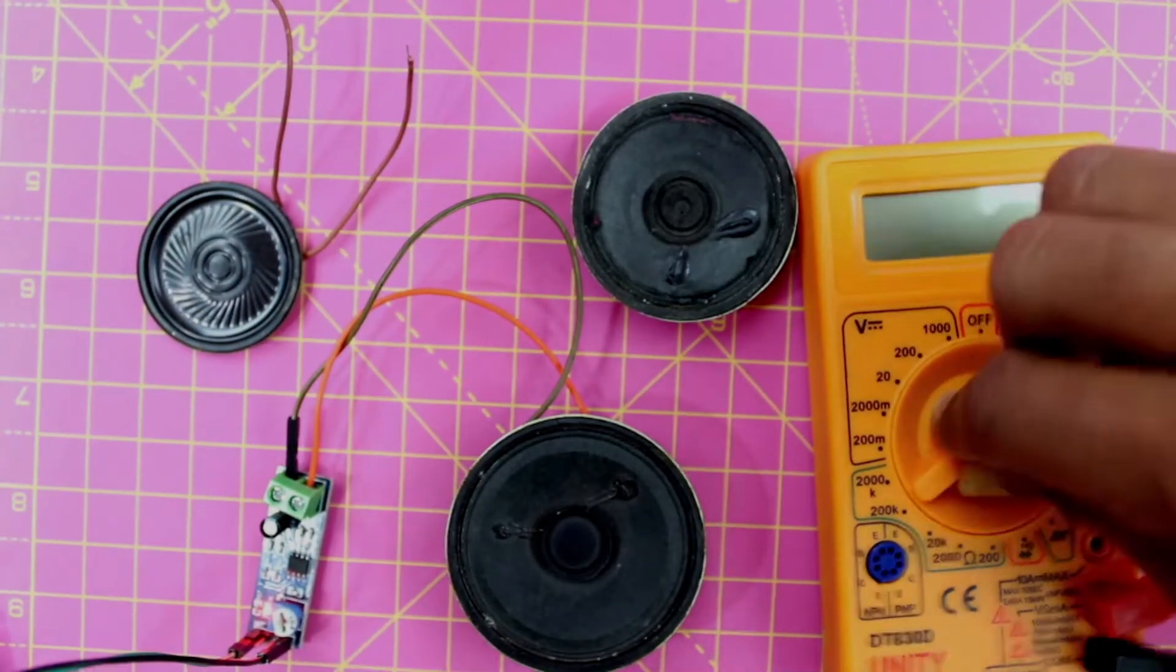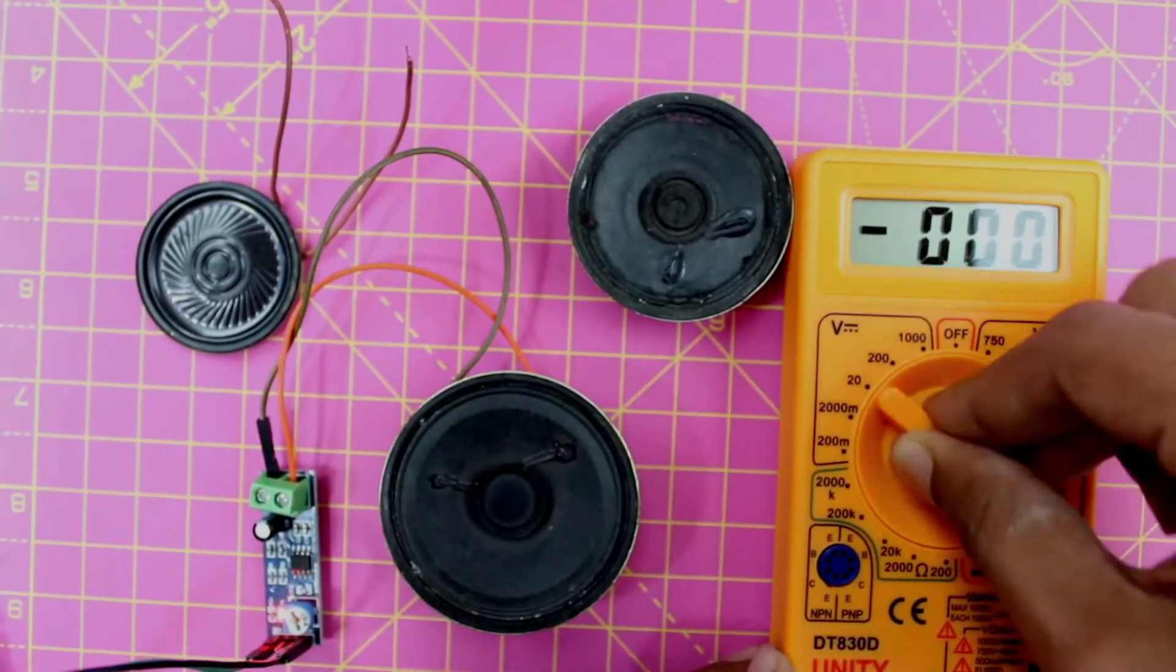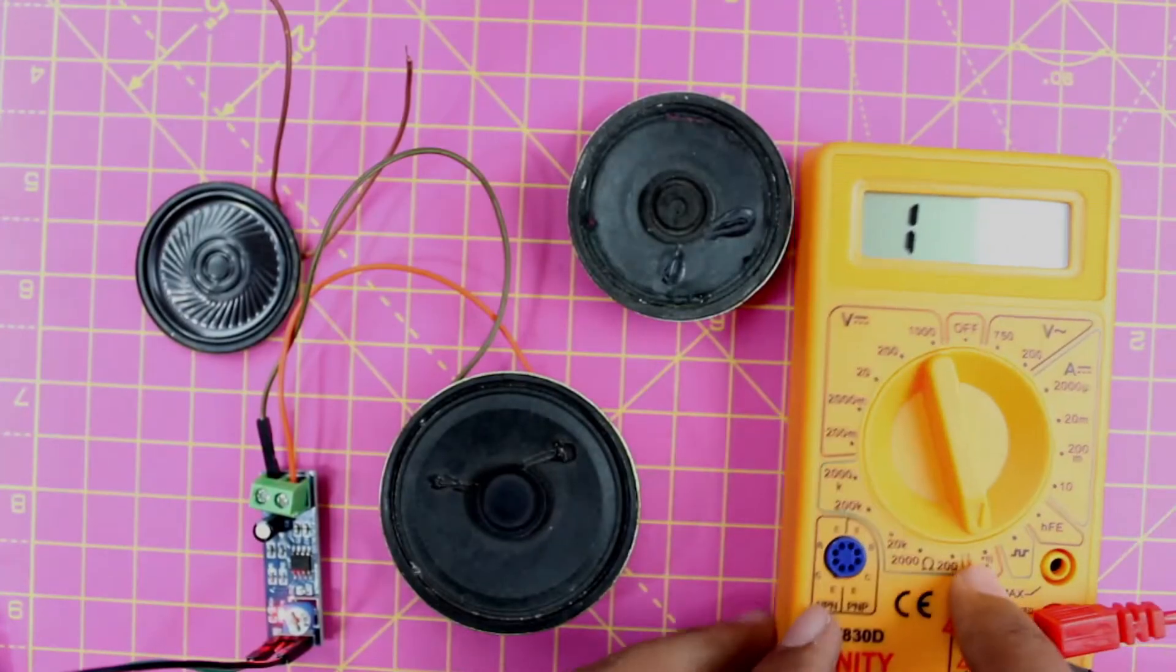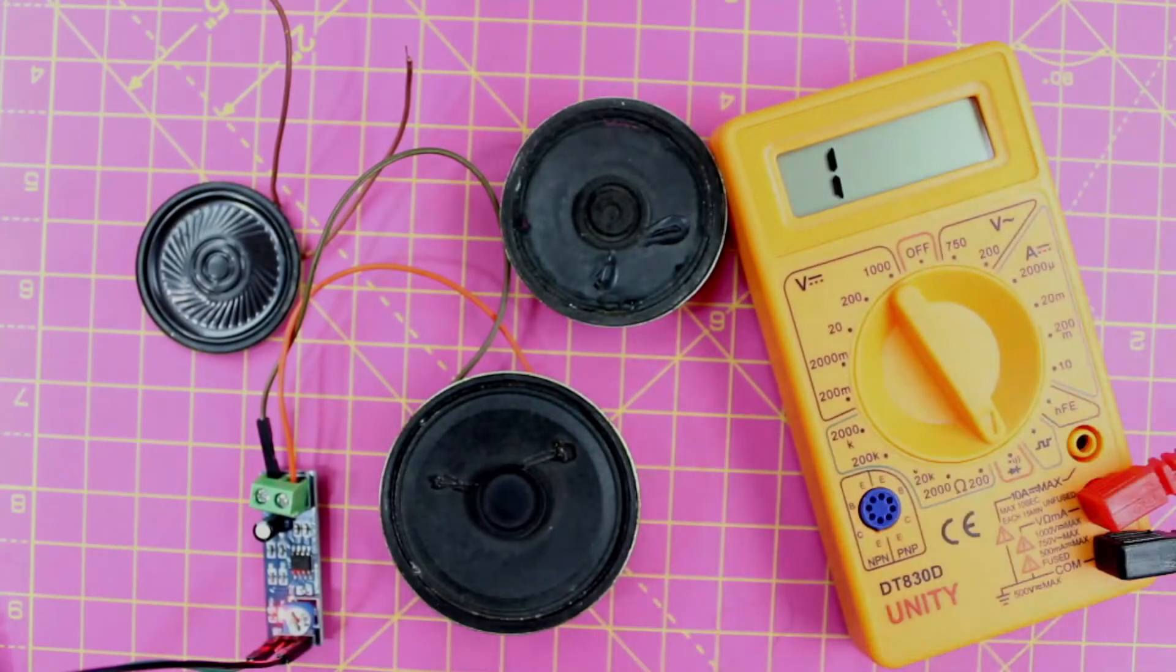The first method is continuity mode. Just put your meter in continuity mode—you can see here the symbol indicates continuity mode.